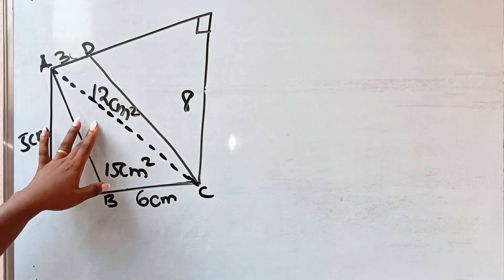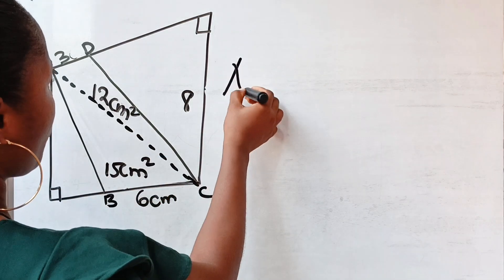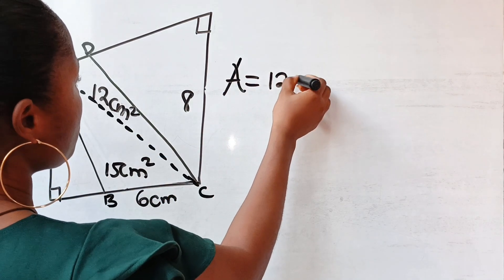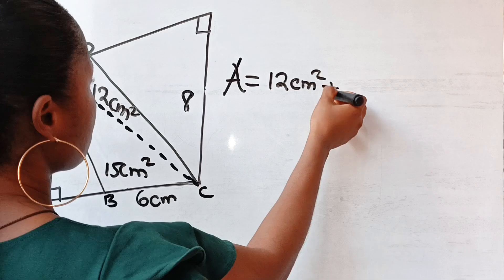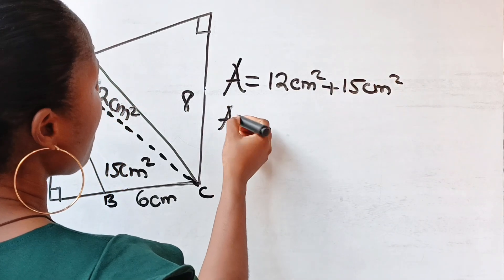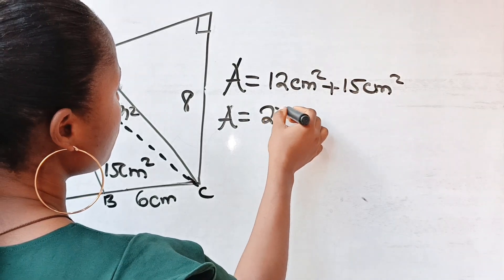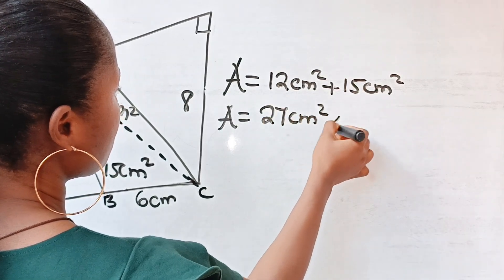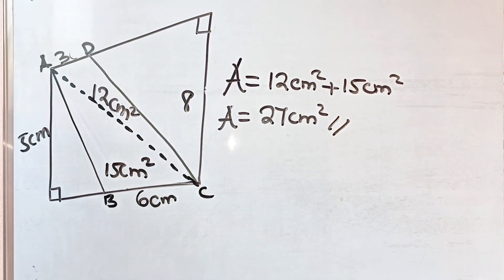So the area of this portion then is equal to 12 cm squared plus 15 cm squared. So the area is equal to 27 centimeter squared. Thank you so much for watching.